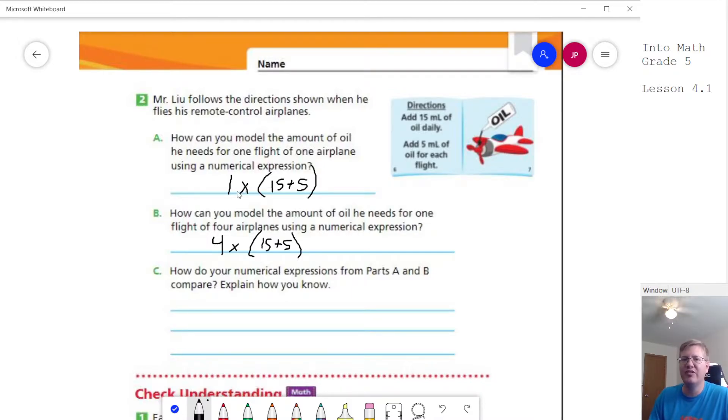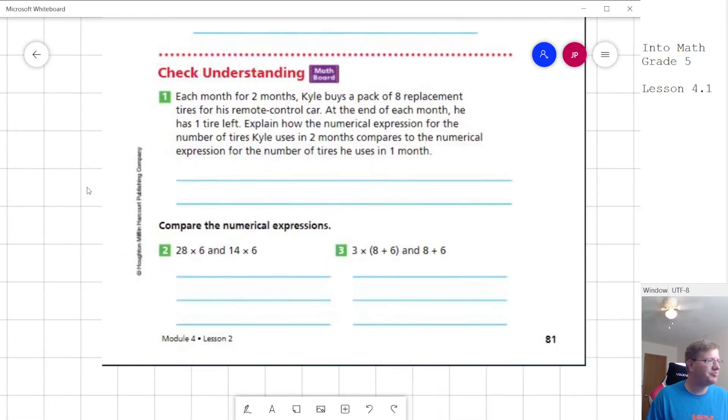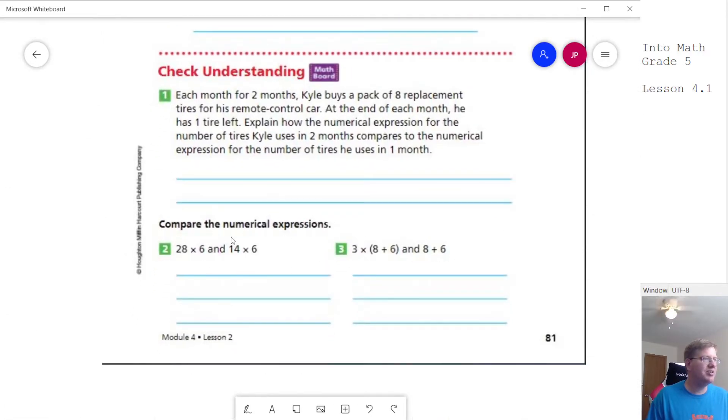Now, if we did something slightly different and said we're going to fly one airplane four different times, we would end up with something different than this. But I'm not even going to talk about what that is because I don't want anybody to get confused. Most of what we're working with, we're going to say that one of these is a certain number of times more than the other thing. So let's scroll the page down a little bit. When we get down here to the bottom, we are going to talk about how these compare.